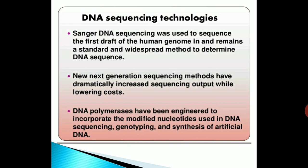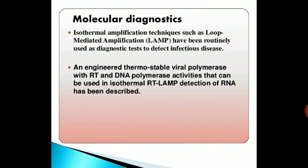Sanger DNA sequencing was used to sequence the first draft of the human genome and remains a standard and widespread method to determine DNA sequence. Next-generation sequencing methods have dramatically increased sequencing output while lowering costs. DNA polymerases have been engineered to incorporate modified nucleotides used in DNA sequencing, genotyping, and synthesis of artificial DNA. In molecular diagnostics, isothermal amplification techniques such as loop-mediated amplification (LAMP) have been routinely used as diagnostic tests to detect infectious diseases. An engineered thermostable viral polymerase with both RT and DNA polymerase activity has been described for use in isothermal RT-LAMP detection of RNA.